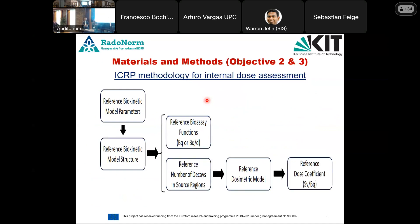This diagram depicts the methodology implemented in IntDOSKit. Reference model parameters, associated with the biokinetic model structure, yield reference bioassay functions — specifically the retention and excretion functions — which are integrated to obtain the number of decays in source regions. These decays are then multiplied by the radiation-weighted S coefficients to output the reference dose to a particular organ or the effective dose for the entire body.